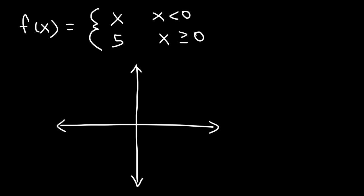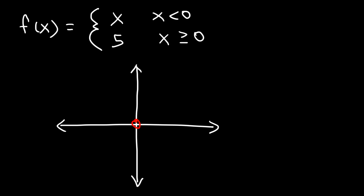When x is less than 0, but not including 0, we're going to graph y equals x. I'm going to put an open circle at 0 because it does not include 0, but it's going to look like y equals x on the left side. On the right side it looks like y equals 5, but it includes 0, so I'm going to use a closed circle at 5. The y value there is 5, and that's how you graph this particular piecewise function.